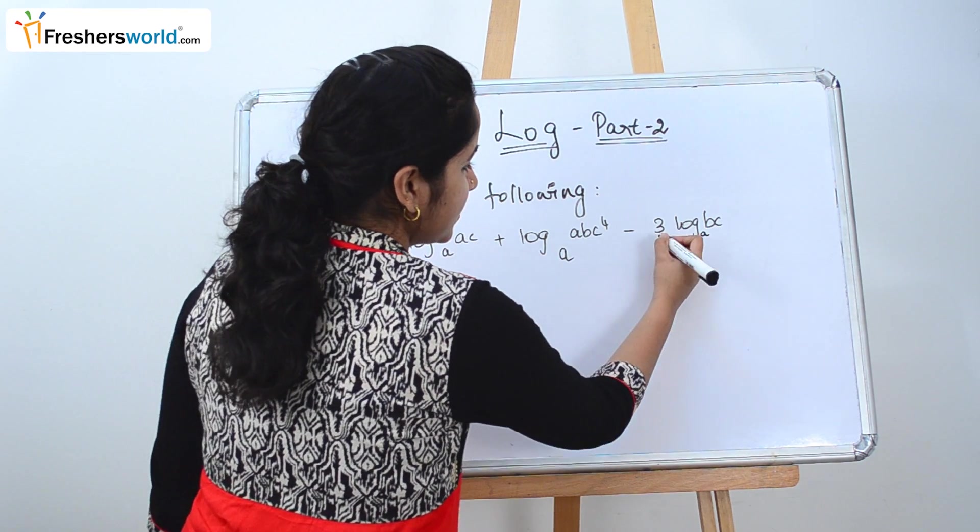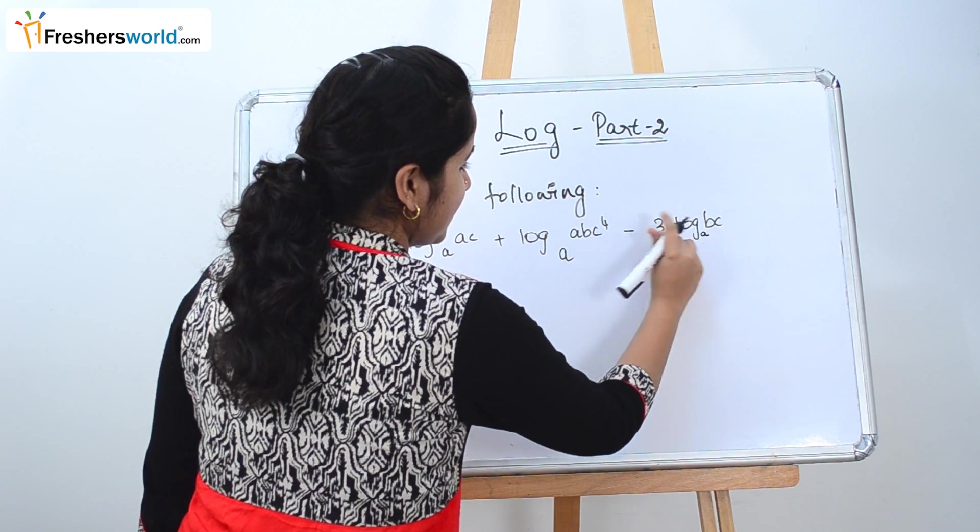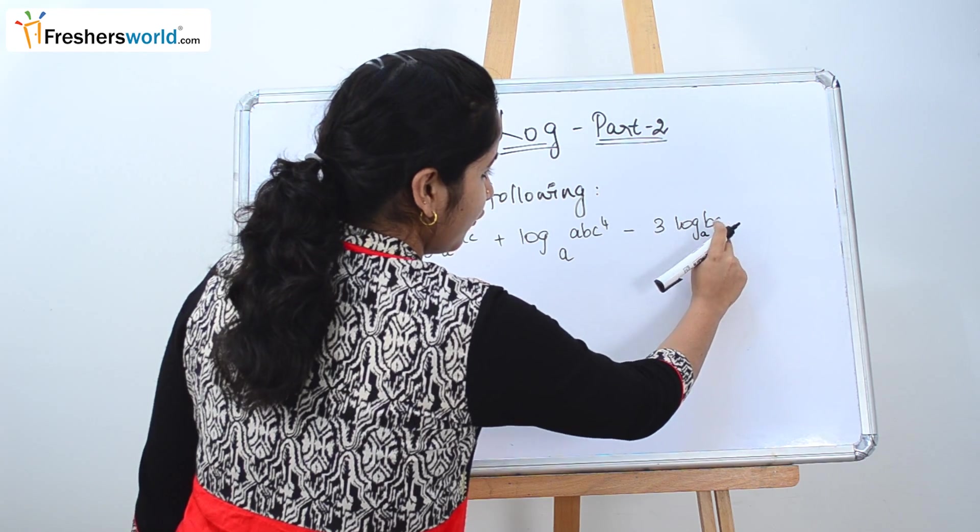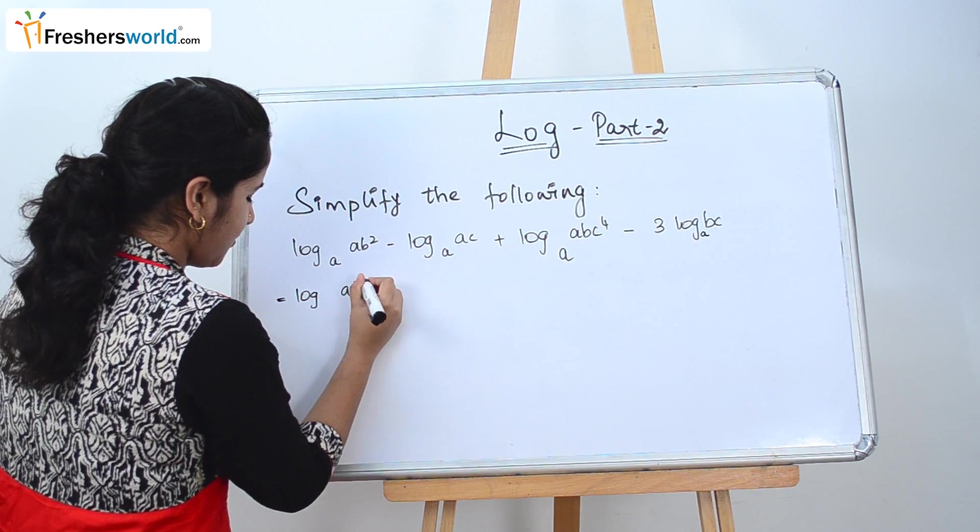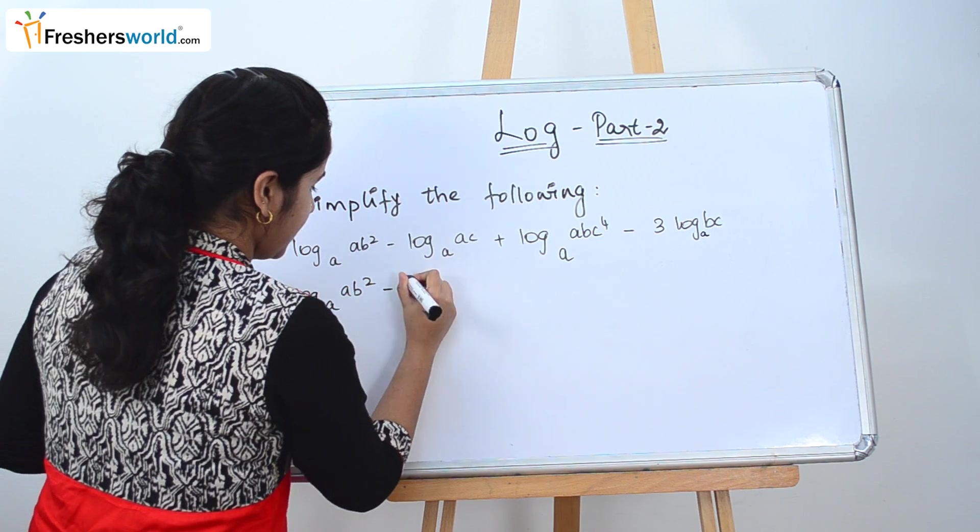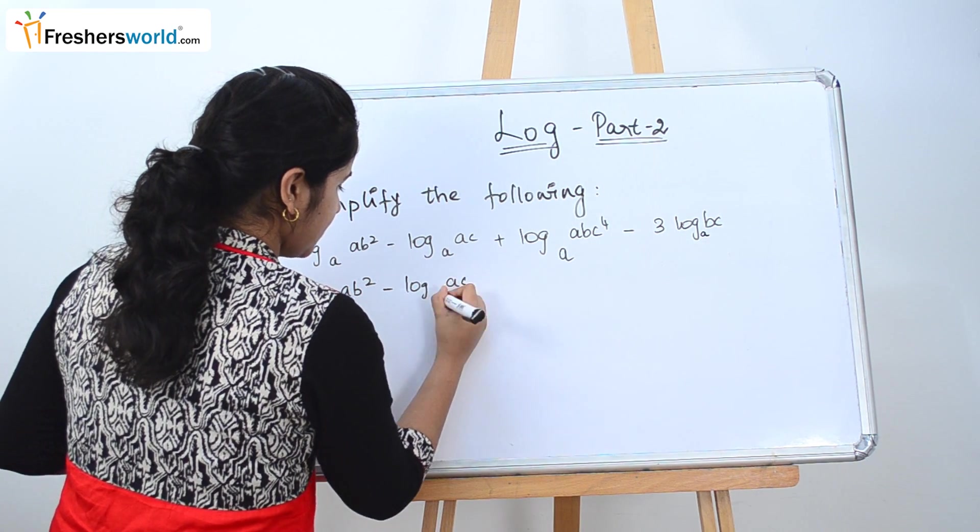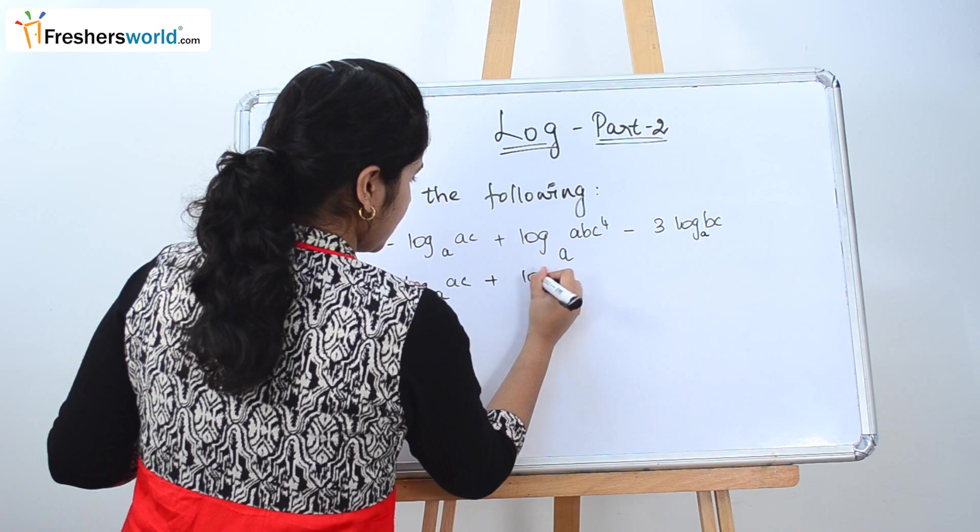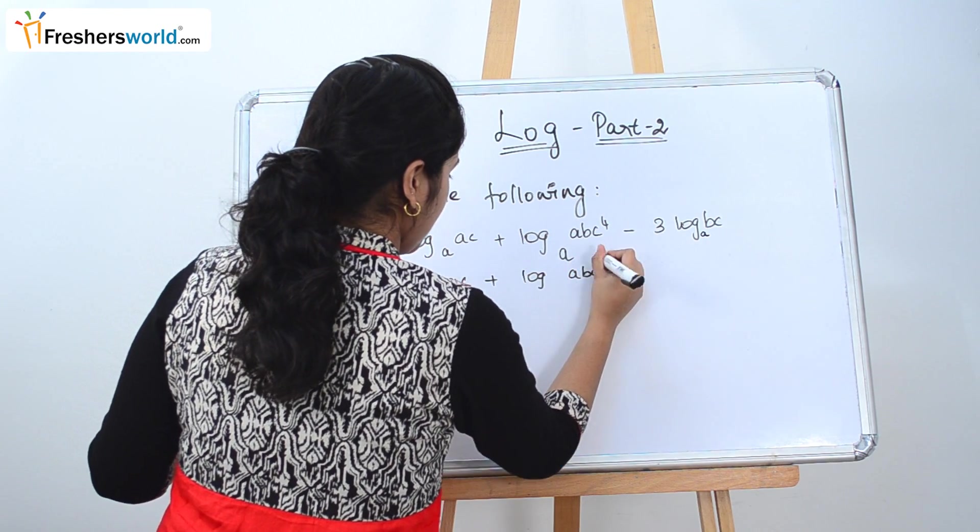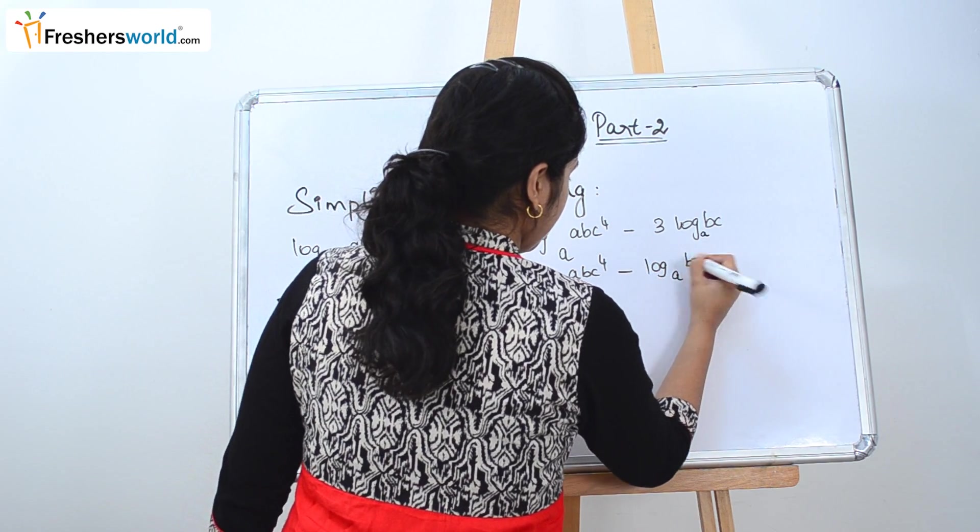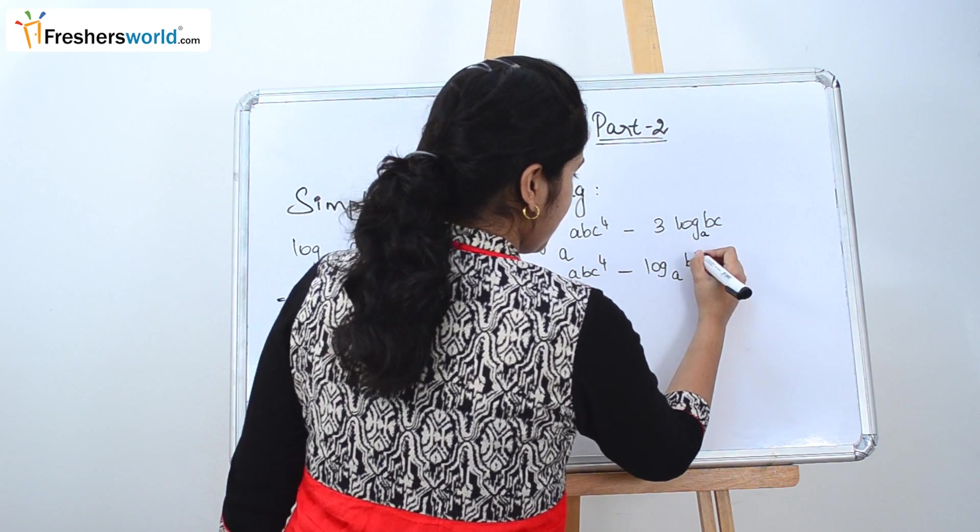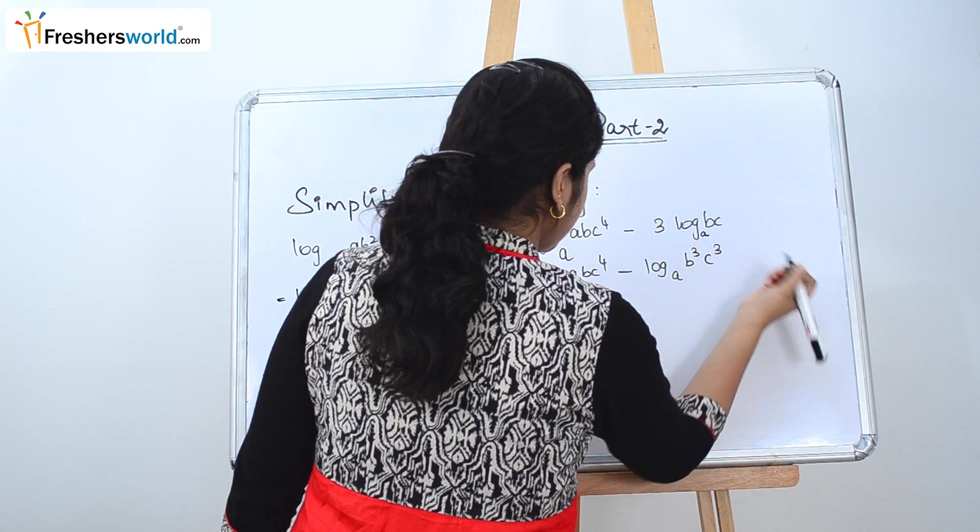First what we are going to do is that 3 log_a(bc). So we are going to take 3 over to the power of bc. So it can be written as log_a(ab²) - log_a(ac) + log_a(abc)⁴ - log_a(b³c³), which is nothing but b³ and c³.